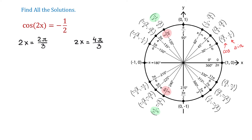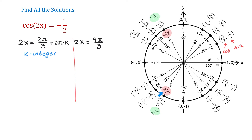Now how do we write these solutions? We will write that 2x equals 2π over 3 plus 2π multiplied by a number k, where k can be any integer. The same situation applies to the angle of 4π over 3 — each time we add or subtract 2π as many times as we want we end up at the same point with value negative 1 half. So at the end of the second equation we also add 2π multiplied by k.